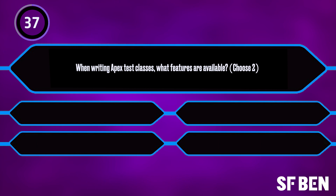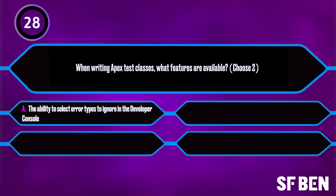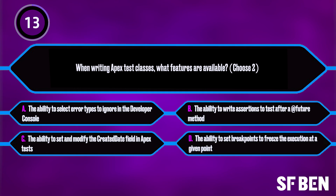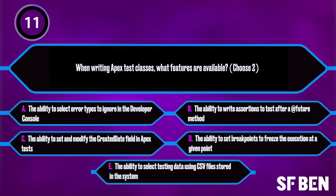When writing Apex test classes, what features are available? Choose two answers. Is it A: the ability to select error types to ignore in the developer console, B: the ability to write assertions to test after a future method, C: the ability to set and modify the created date field in Apex tests, D: the ability to set breakpoints to freeze execution at a given point, or E: the ability to select testing data using CSV files stored in the system? Remember, there are two correct answers.